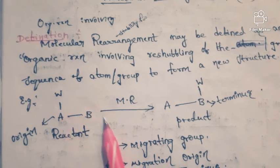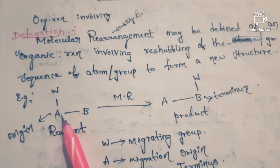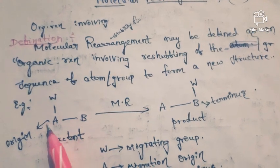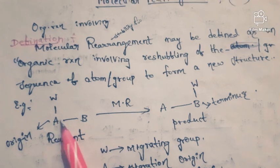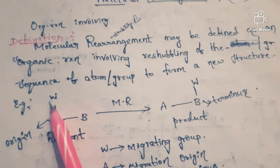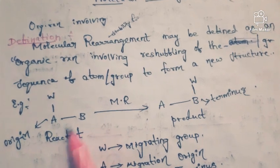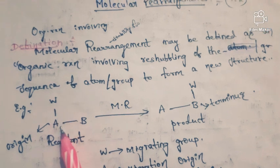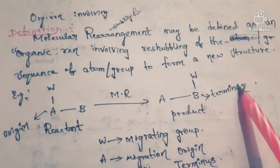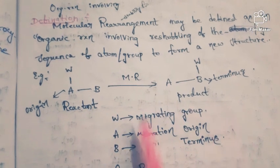For example, this is the reaction and this is the product. Here A is the migration origin, and this is the migratory group. At first, the migratory group is present at the origin, and this is the migration terminus. After the molecular rearrangement, the migratory group goes from the origin A to the terminus B. By this example you can understand the definition of molecular rearrangement.